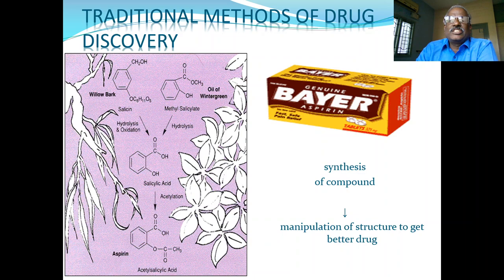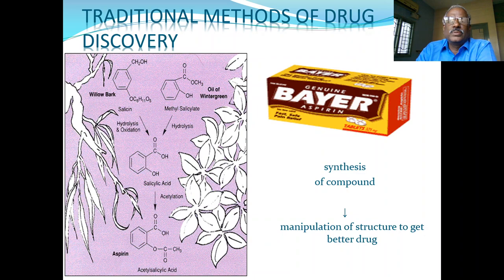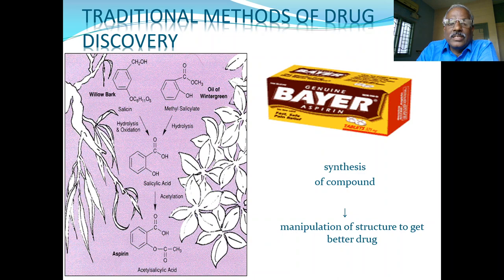Take Momordica charantia — bitter gourd, called paharkai in Tamil — it is bitter in taste. Any sweet principle can be nullified by the bitter, so based on that concept, bitter gourd is used for the treatment of diabetes mellitus. Beetroot, blood red in color, is a vitalizer and increases production of RBC. Based on color, shape, and characters — for example, the ripe fruits of bitter gourd look like our pancreas in shape, size, and character — we can decide what the probable pharmacological action of a plant will be. That branch is called the doctrine of signature.